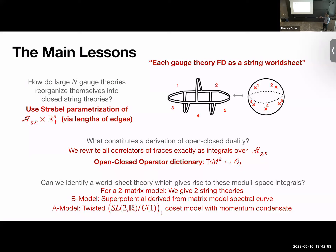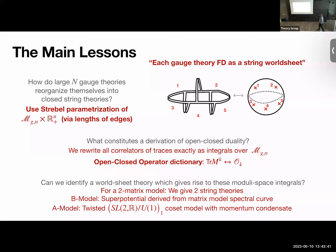The key slogan is that each Feynman diagram itself is some sort of string worldsheet — not just that the sum of Feynman diagrams equals the sum over worldsheets, but matching at the integrand level. This works using the Strebel construction. In higher dimensions, the edge lengths would be the Schwinger time of the propagator. In this zero-plus-zero dimensional case, all edges are set to one — there's no time.